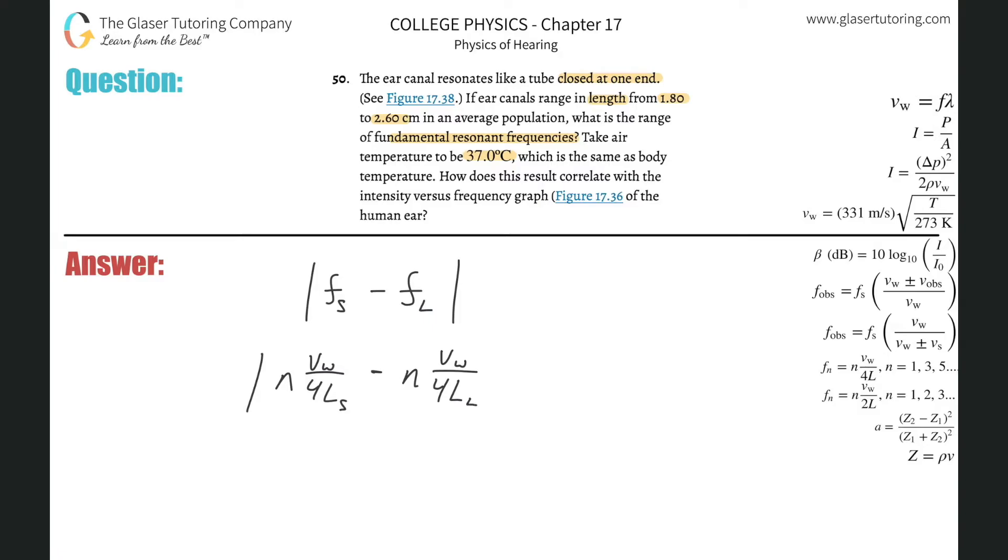Then minus n multiplied by the velocity of the sound divided by four times the length of the tube when it's longer. Notice we have common factors - the n, the velocities, and the four, so we can pull those out.